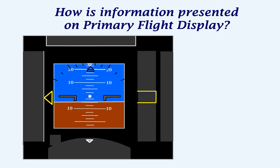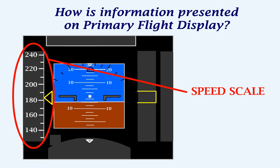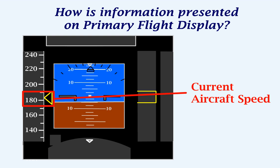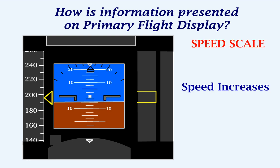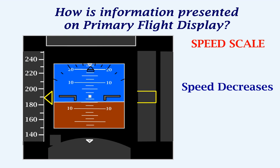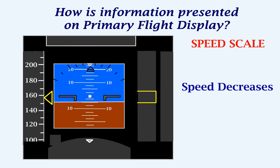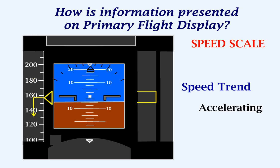Towards the left of the PFD we have the speed scale, which indicates the aircraft's speed. This indicates the aircraft's current speed on the speed scale. As the speed increases, the speed tape moves down; when the speed decreases, the speed tape moves up. The speed scale could also include a speed trend arrow, which gives an idea of what speed the aircraft will reach after a few seconds. If it points upward, the aircraft is accelerating; if it points downward, the aircraft is decelerating.